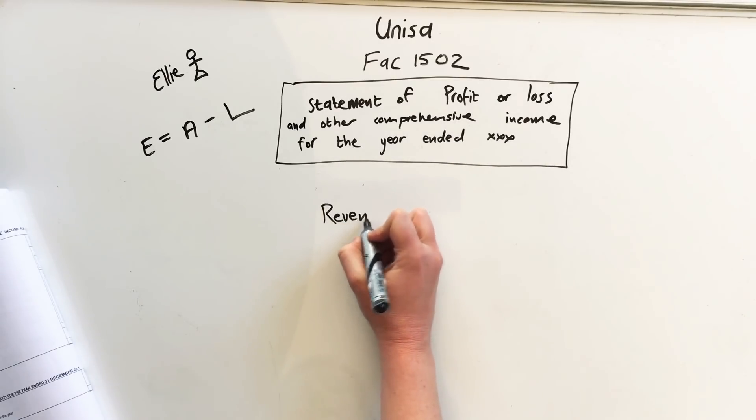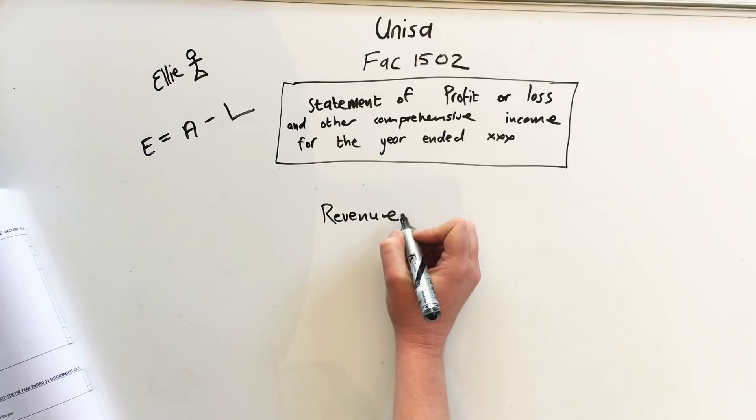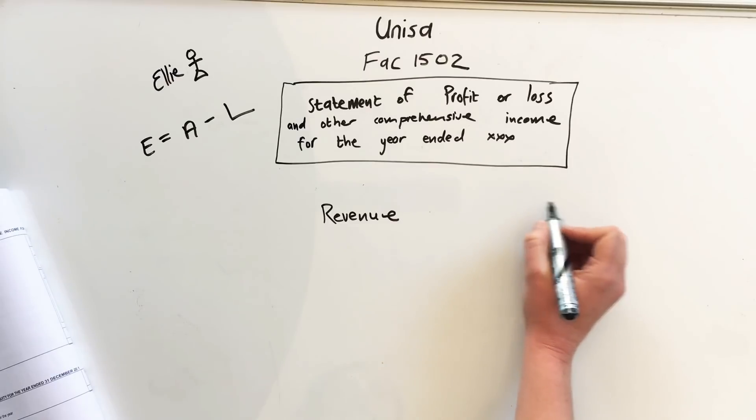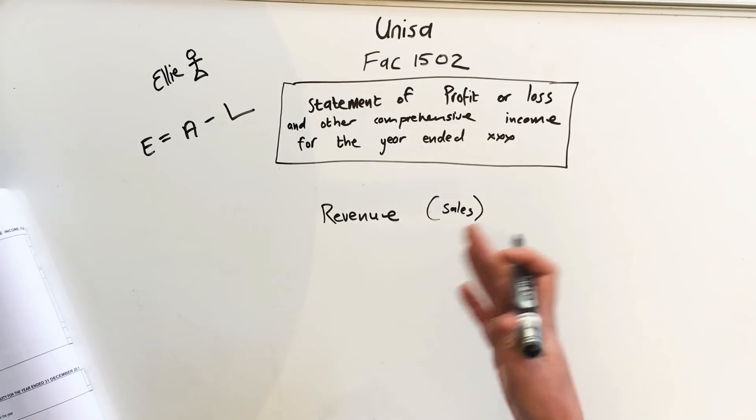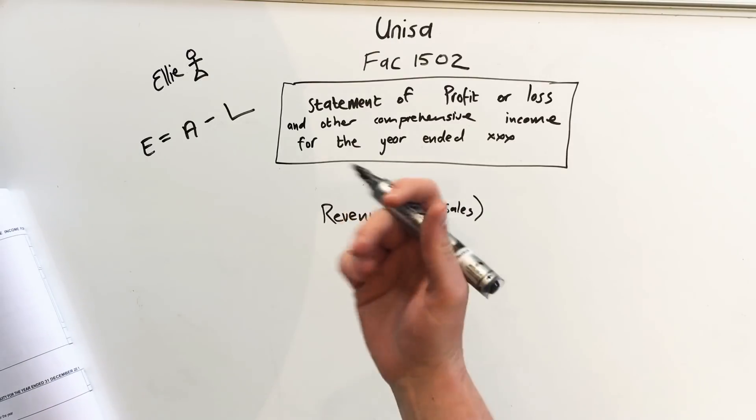Revenue, which will be the money you got in from sales. So that would be the money you got in from sales, or if you run, for example, a hairdressing company, the money that the clients paid you.